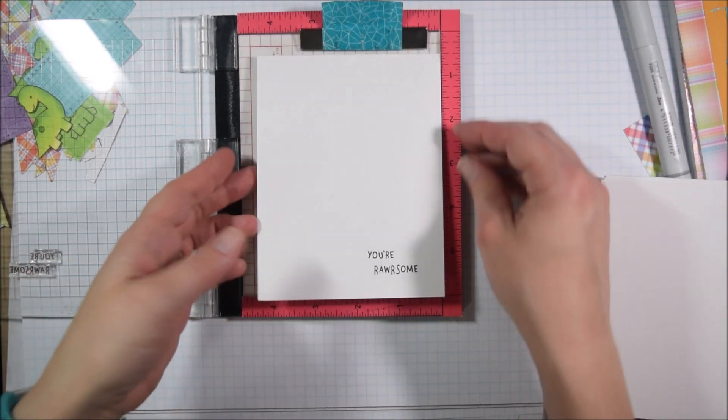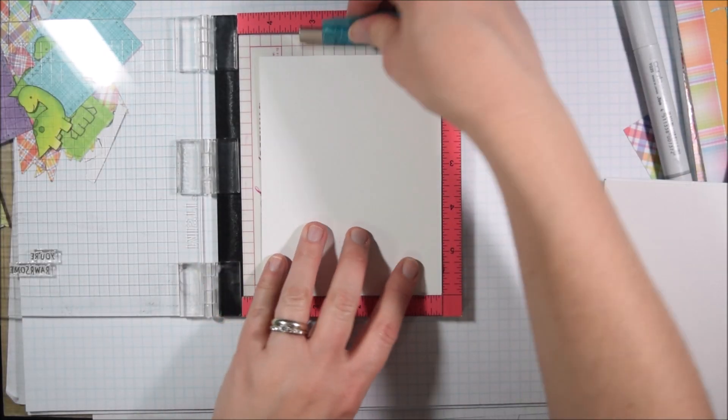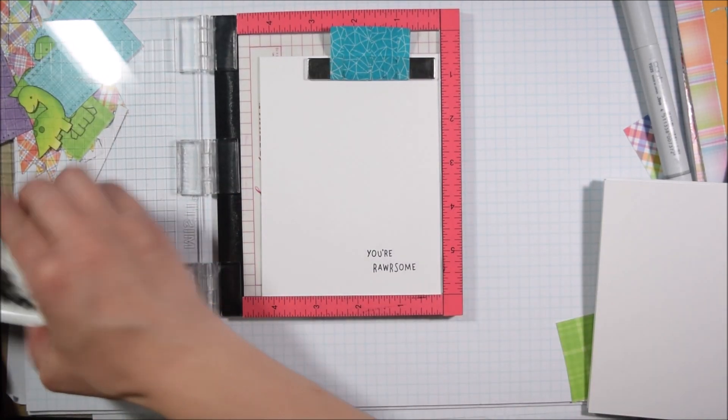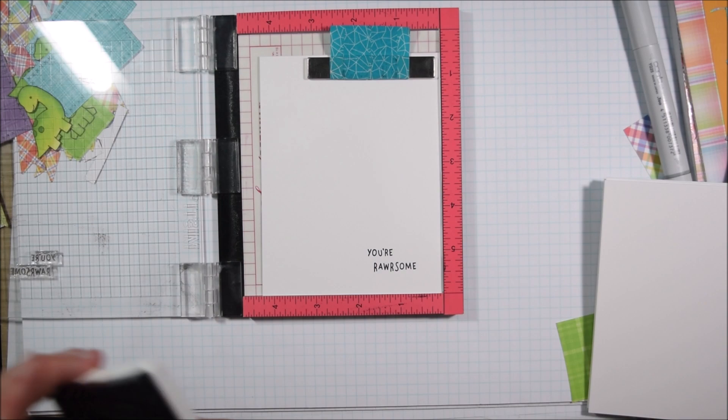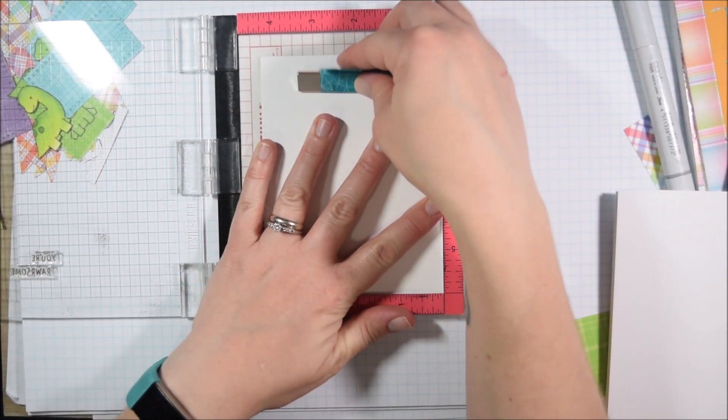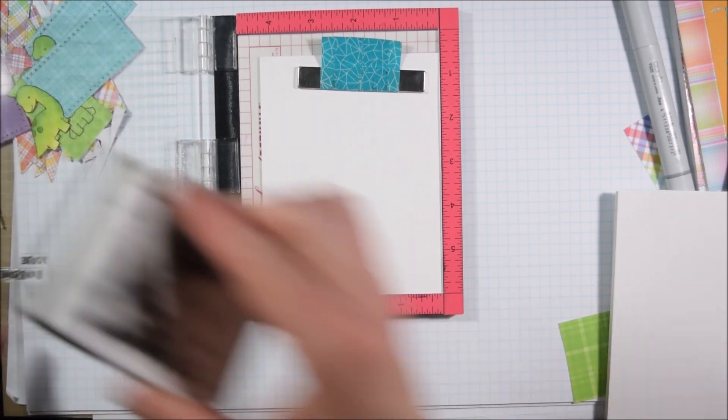I decided I would just put my sentiment in a stamp positioner tool. So here I have the Mini MISTI, and I'm going to use VersaFine ink. It for the most part gives a good impression the first time, but because these are brand new stamps, I usually decide to stamp twice just to make sure I get a nice impression.